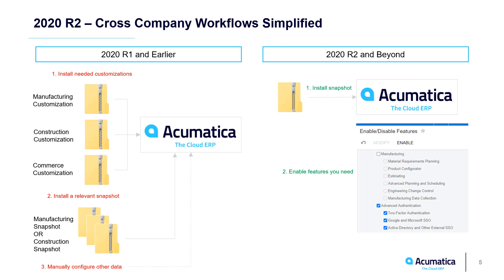What does that mean to you as a demoer? Prior to 2020 R1, you had to install Acumatica and then install whatever customizations you needed to show. Since they were customizations, you could only install one snapshot, and that snapshot might contain construction data, manufacturing data, or commerce data — but not all of them. This meant you had to manually configure the other pieces to get an end-to-end workflow.